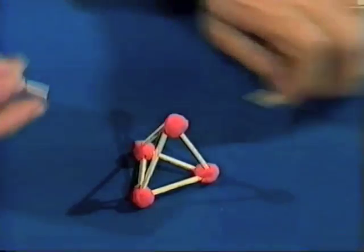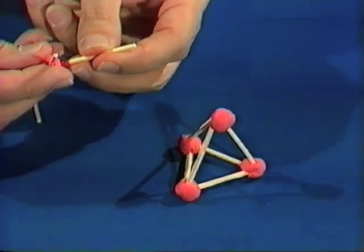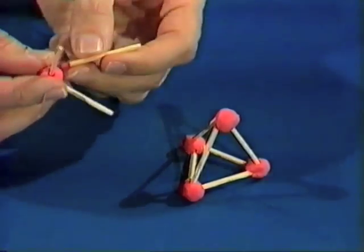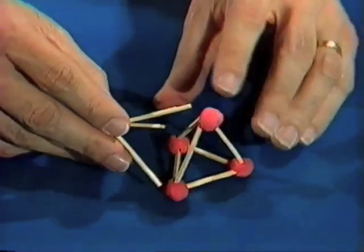Well, we still have three matches left. What can we do with those? Well, of course, we can stick the heads of those matchsticks into another blob of plasticine. And then, carefully, we can place them on one side of the tetrahedron.